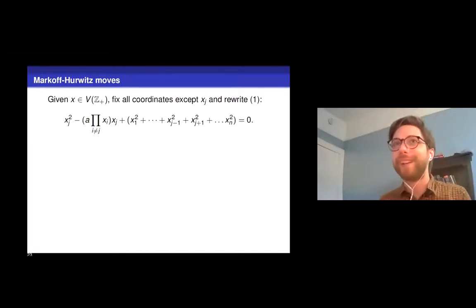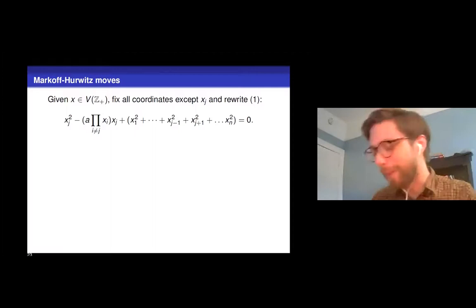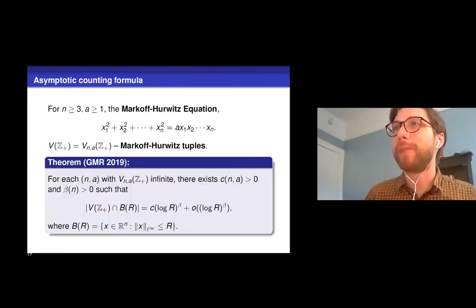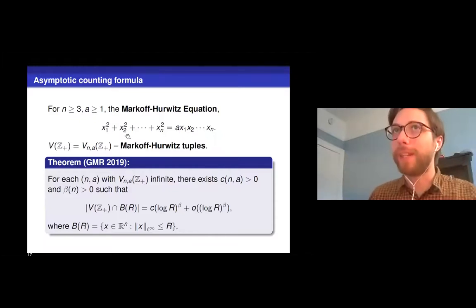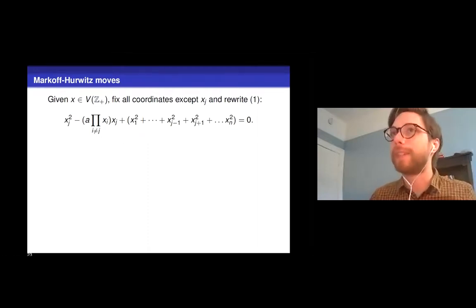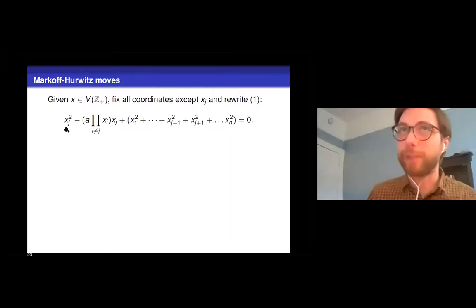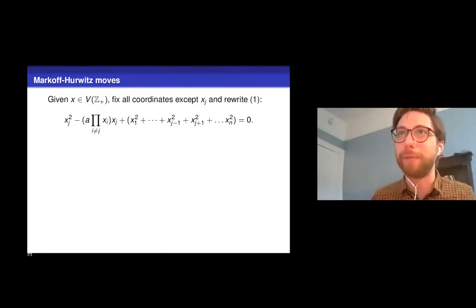So for the next little bit of this talk, I'll be just talking through some observations about how to generate these tuples. And these are all observations that were known to Zagier and Baragar. And then towards the end of the talk, I'll try to indicate what our primary new contribution was that let us make some progress here. All right. Let's see. So the key ingredient to studying this problem in the n equals 3 case or the general n case is using the so-called Markoff-Hurwitz moves. So what do I mean by this? Take that Markoff-Hurwitz equation. Let me go back to it over here. Take this Markoff-Hurwitz equation. And instead of thinking of this as an equation with n variables, why don't we fix all but one of those variables?